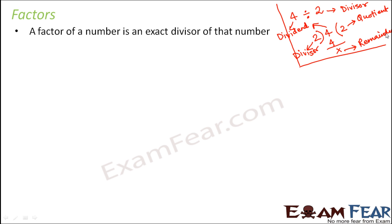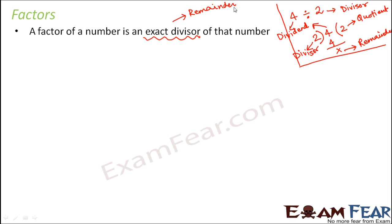A factor is an exact divisor of a number. Exact divisor means that when that number is divided by the factor, the remainder will be 0. In other words, the number will be exactly divisible by the factor, leaving no remainder behind.